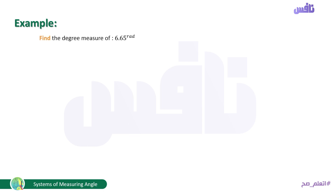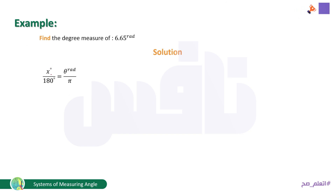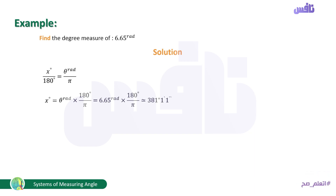Another example: find the degree measure of 6.65 rad. The question gives the angle in radians and asks for degrees. Using the same formula: x° = θ rad × 180/π. Substituting 6.65 and using a calculator, the result is 381 degrees, 1 minute, 1 second.